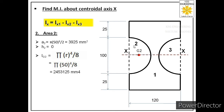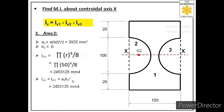Applying the parallel axis theorem: Ix2 = Ig2 + A2 × h2². Since h2 = 0, the area moment of inertia of area 2 about the main axis equals its centroidal moment of inertia Ig2. Both axes are at the same location, which is why the two values are equal.